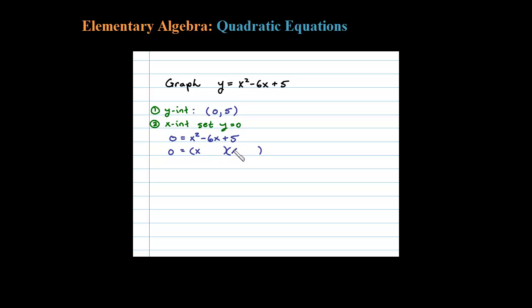Here I'm going to factor 5 as 1 times 5. 1 times 5 is 5, and I'll get a negative 6 out of 1 and 5 if they're both negative. Negative 1 plus negative 5 is negative 6x, and a negative times a negative is positive. Then set each factor equal to 0. So here x equals 1 or x equals 5.